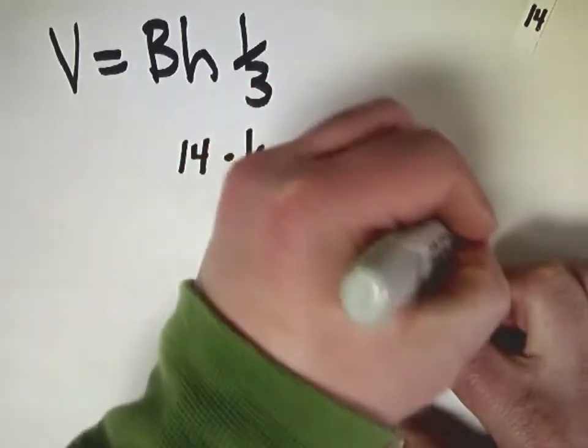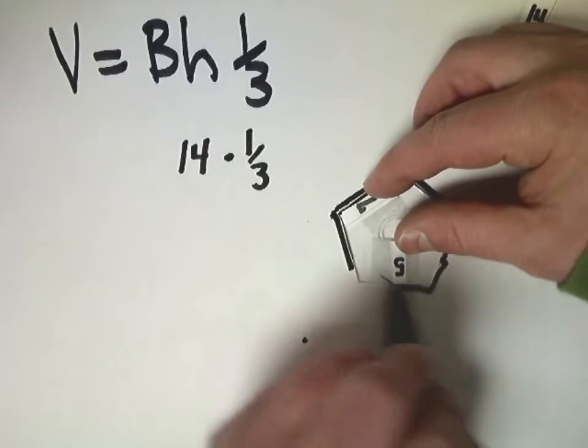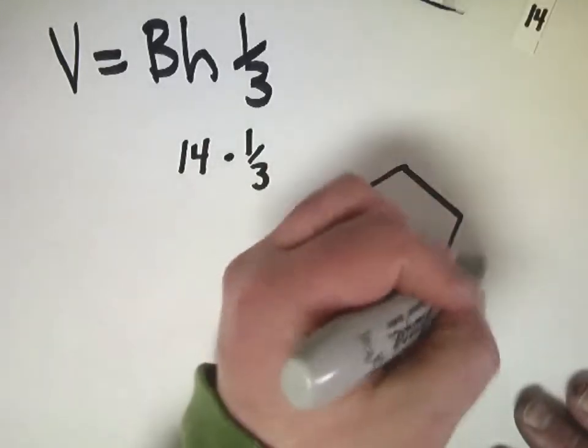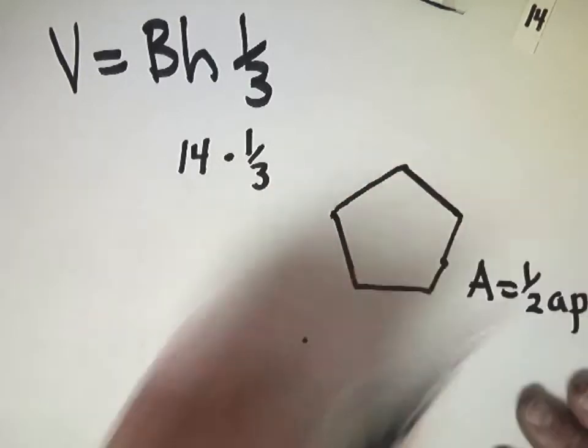But the reality is, in order to find big base, I need to find the area of this regular figure. And there's a couple ways that you can do it. One of which is to use the formula for a regular polygon, which is area equals one-half apothem times perimeter.